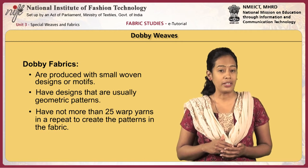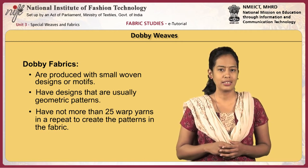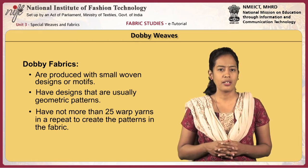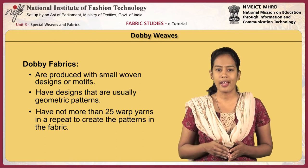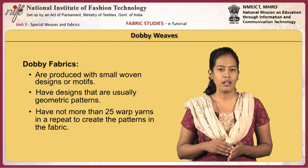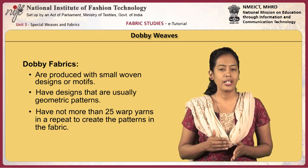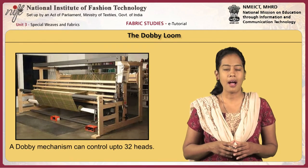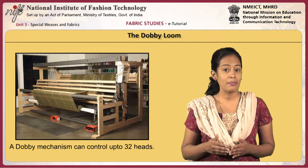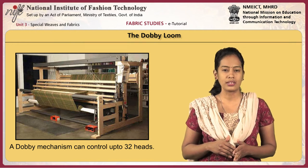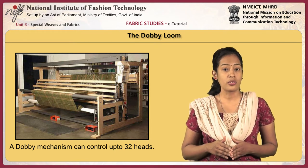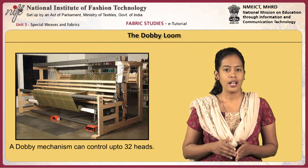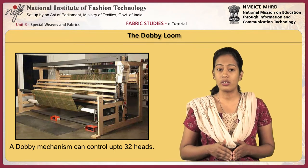These are fabrics produced with small woven designs or motifs. Designs are usually geometric patterns. They have not more than 25 warp yarns in a repeat to create the patterns in the fabric. Dobby weaves are manufactured in looms having a special mechanism called dobby looms. A dobby mechanism can control as many as 32 healds. More complex and expensive weaves can be created on this machine, besides simple weaves such as plain, twill, and satin.